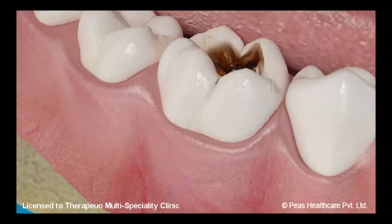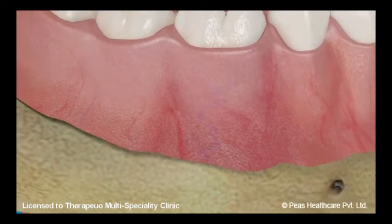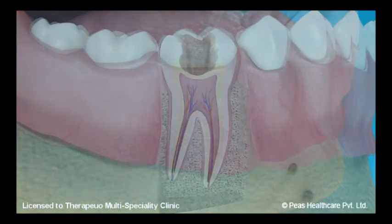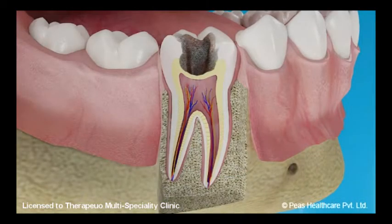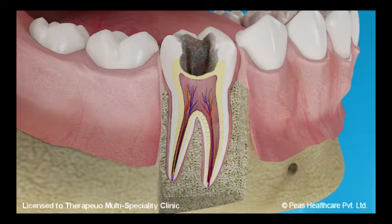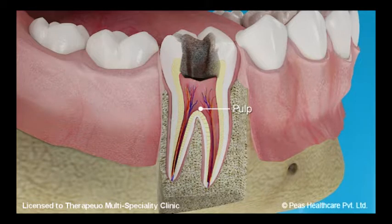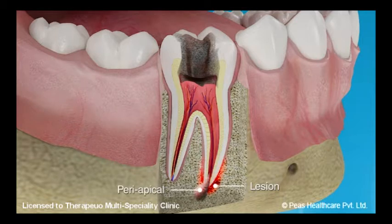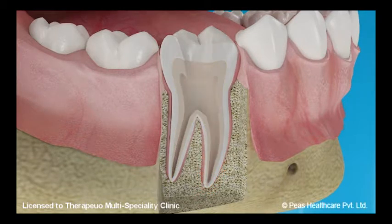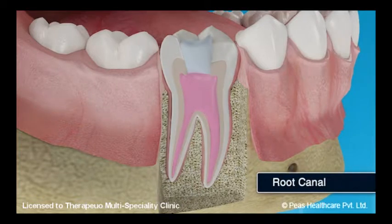Dental decay spreads and the cavity becomes larger. If at this point it is not arrested or treated, it destroys the tooth. It will then soon reach and invade the normally sealed and protected pulp of the tooth. Once the decay has breached the pulpal area, the treatment becomes more complicated. Even though very elaborate, it is still possible to treat such affected teeth with a root canal or a crown.